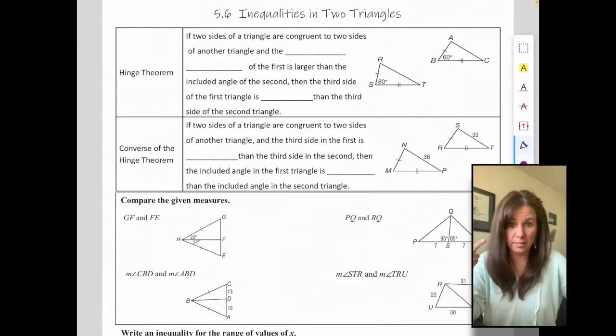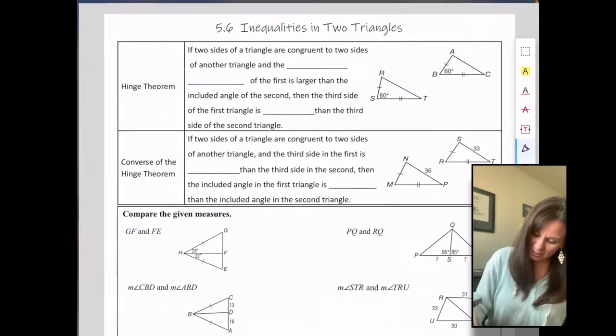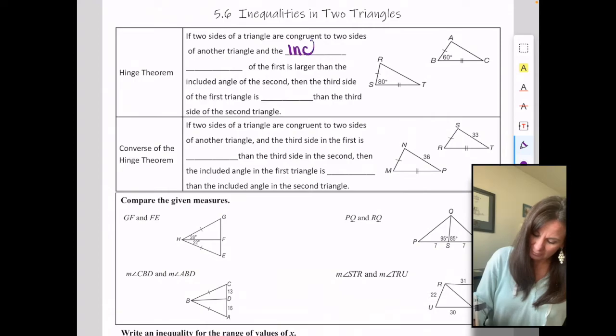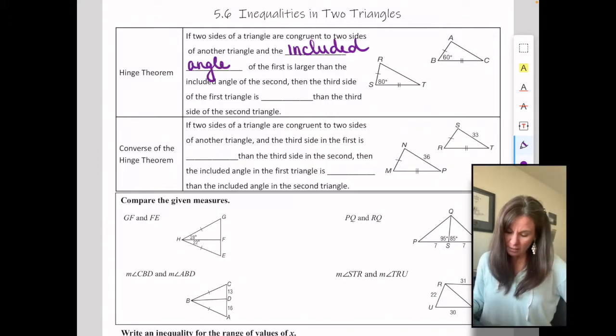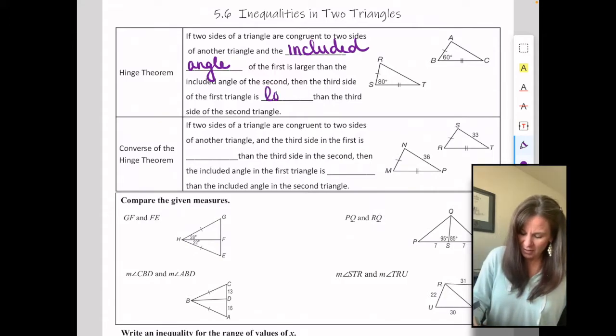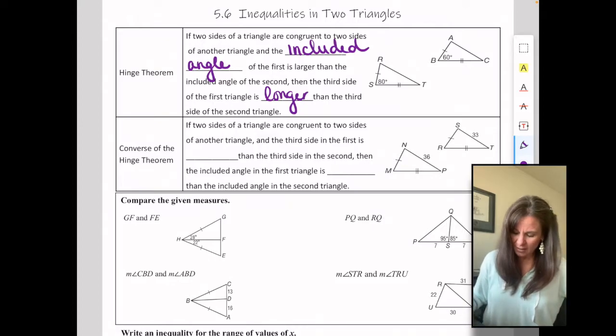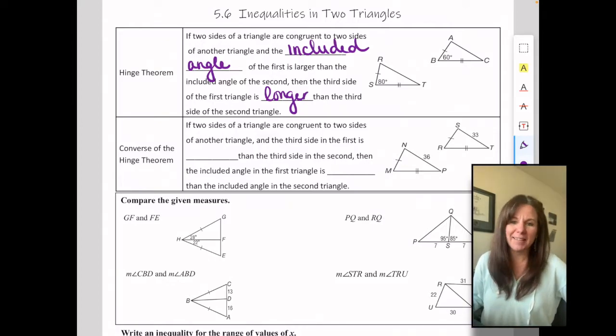The concepts are very similar. So to begin, if two sides of a triangle are congruent to two sides of another triangle and the included angle of the first is larger than the included angle of the second, then the third side of the first triangle is longer than the third side of the second triangle. I keep giggling because there's so many words going on.